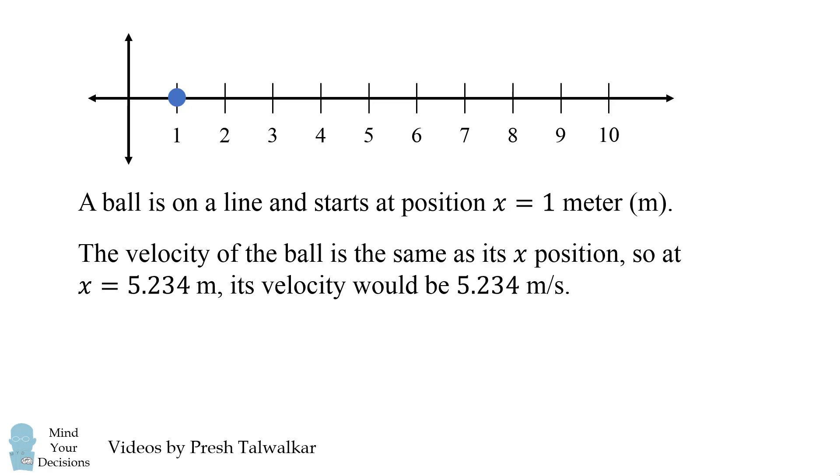The velocity of the ball is the same as its x position. So at x equals 5.234 meters, its velocity would be 5.234 meters per second.